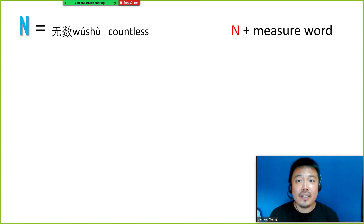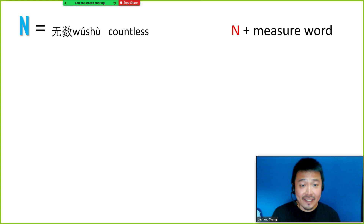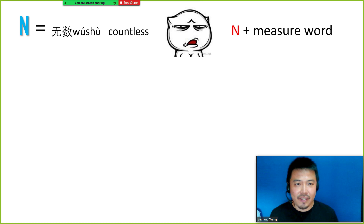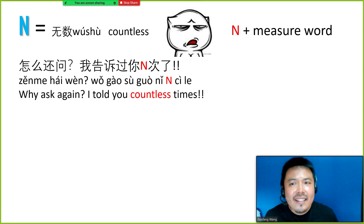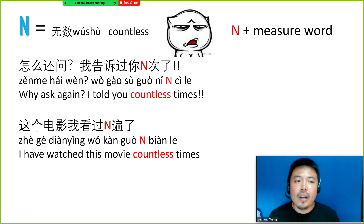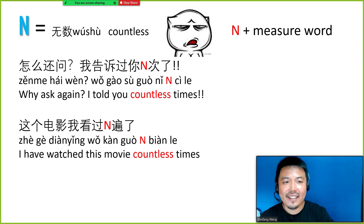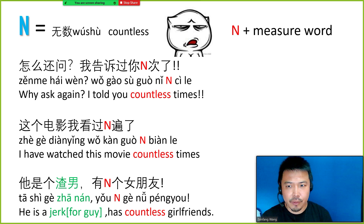The next letter is N. N means 无数 in Chinese, which means countless. N is always followed by a measure word, and when used as letter slang it always expresses an impatient feeling. For example, 怎么还问，我告诉过你N次了 — why are you asking again, I have told you countless times. Or 这个电影我看过N遍了 — I have watched this movie countless times. Another example: 他是个渣男，他有N个女朋友 — he's such a playboy, he has countless girlfriends.